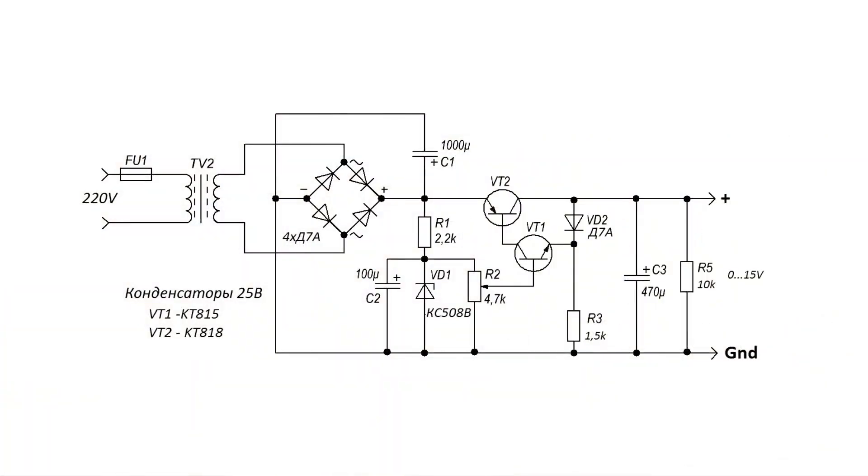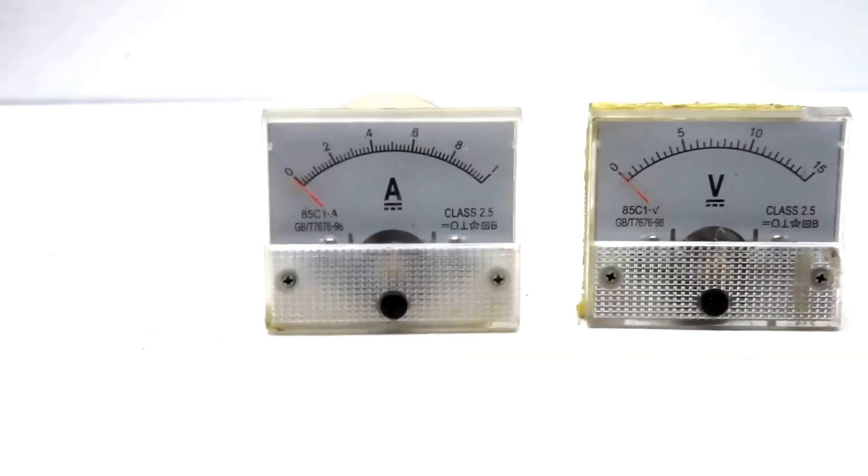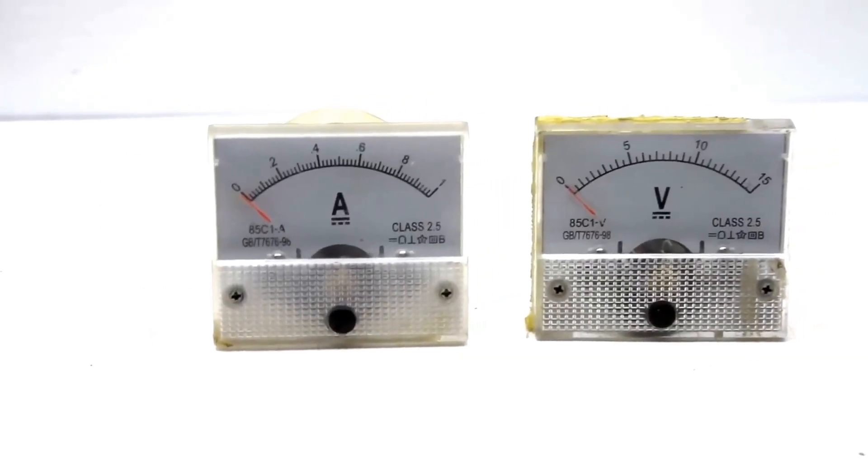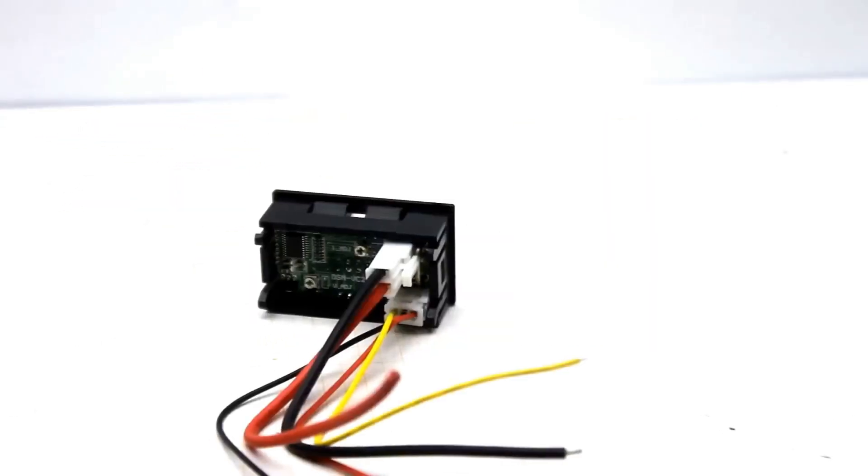Now in front of you is the same circuit translated to the China component base. For voltmeter and ammeter, I have analog meters, but there's nothing stopping you from using modern digital displays.